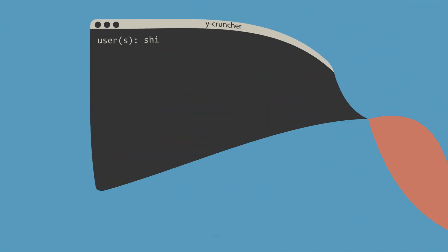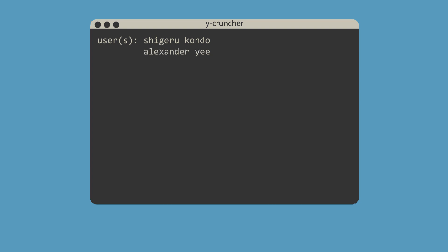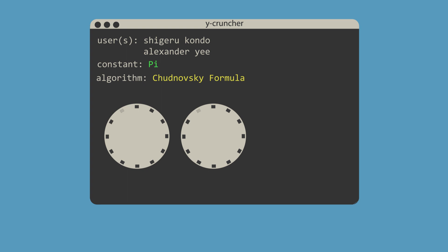Currently, the record for the most calculated digits of pi belongs to Shigeru Kondo and Alexander Yi, who found an outstanding 12.1 trillion digits of pi in December 2013, on a homemade computer which they ran continuously for 94 days.